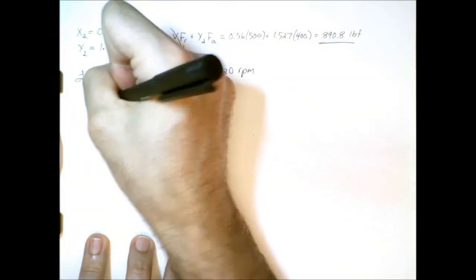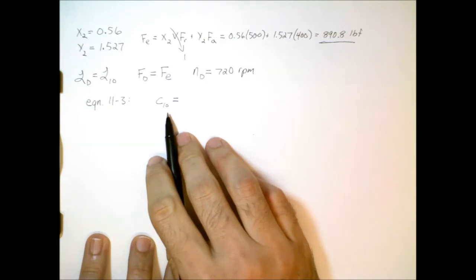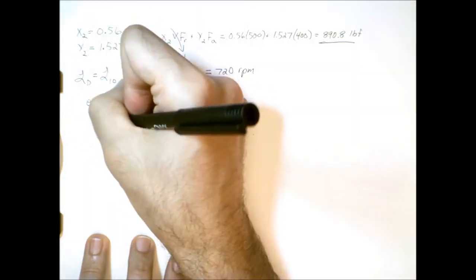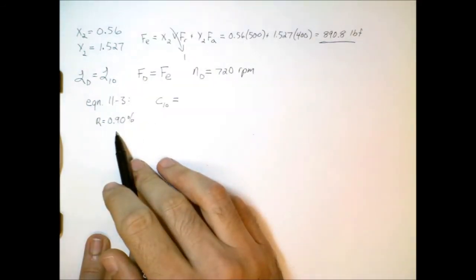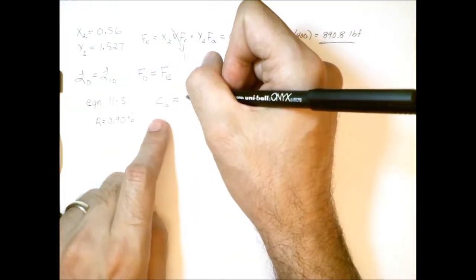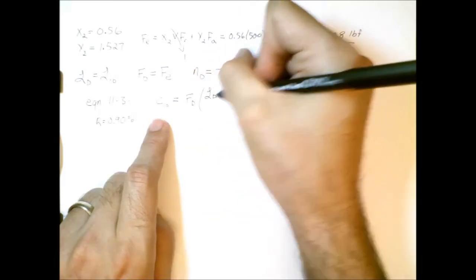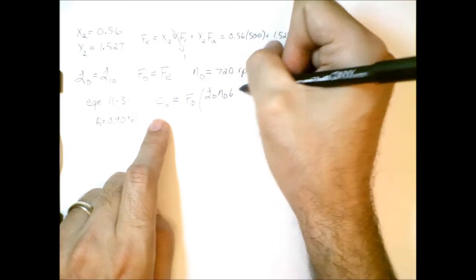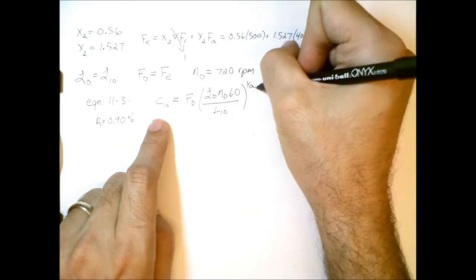So, if we go back to equation 11-3 for C10. Now, this is the simpler formula. Remember, here we were told that reliability can remain at 90%. And if that's the case, we don't have to worry about the Weibull distribution. If we did have to change reliability, then we would need to go for the more complicated formula. So, in this case, the simpler formula for the C10 value is equal to the design load times design life in hours times speed times 60 divided by L10 all to the power of 1 over A.